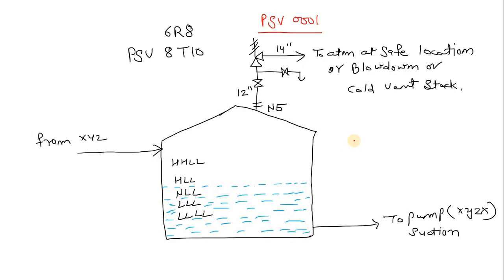First of all, let's see why we use the PSV. PSV is a Pressure Safety Valve. It means that if your system pressure increases, or if due to some reason the system becomes over-pressurized, then this PSV is the last protection. It will mitigate that pressure and depressurize the system. When the pressure becomes below the safe limit, this PSV will close.